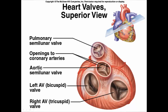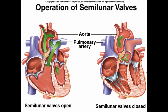The cusp direction determines which way blood flow is stopped. For the semilunar valves, when the ventricles contract and push blood into the pulmonary trunk or aorta, the cusps face outward. When the ventricles empty, blood rushing back from the arteries pushes against the cusps, closing them and preventing backflow into the ventricles.